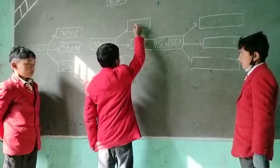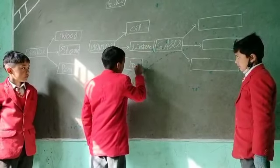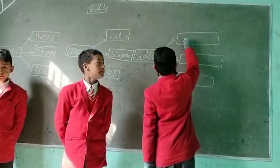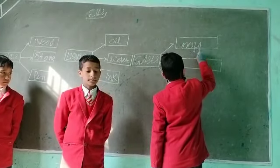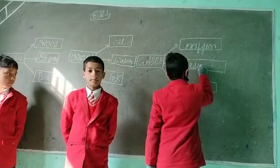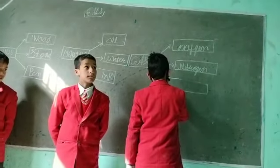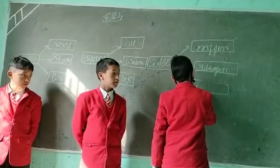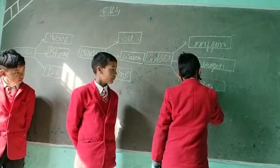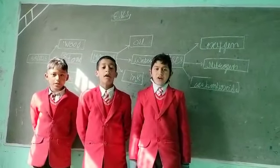Liquid. First is Oil, O-I-L. Second is Water, W-A-T-E-R. Third is Ink, I-N-K. The third part is Gases. First is Oxygen, O-X-Y-G-E-N. Second is Nitrogen, N-I-T-R-O-G-E-N. Third is Carbon Dioxide, C-A-R-B-O-N D-I-O-X-I-D-E. Thank you dear friends for your kind attention.